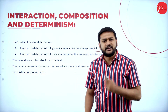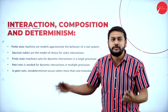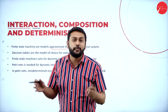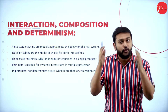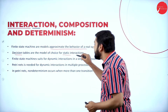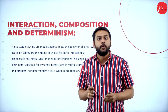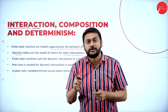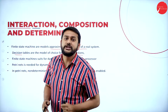I have the finite state machine model, which gives me the approximate behavior of the real system. I also have decision tables — when I want to know the static interaction I will use the decision table. I will also use the finite state machine when I am dealing with dynamic interaction with a single processor.